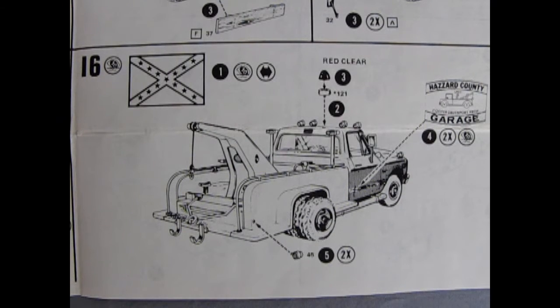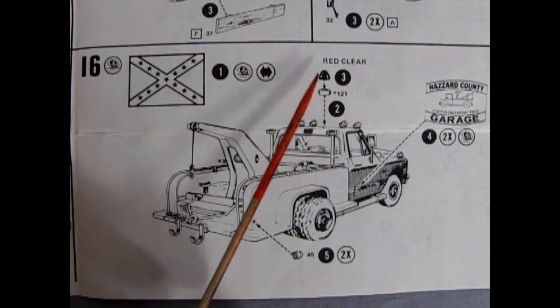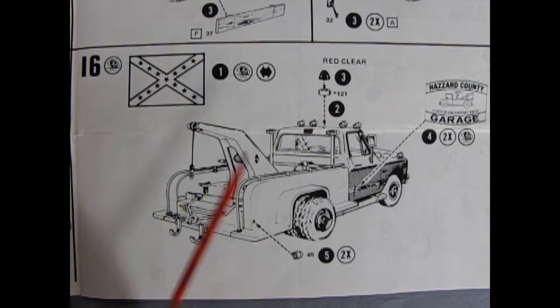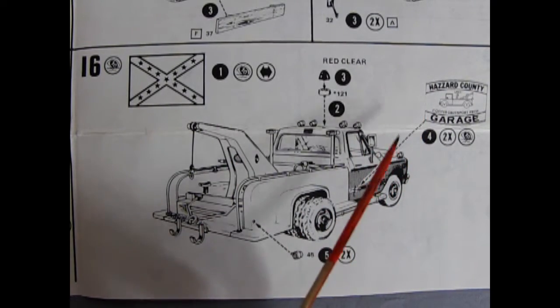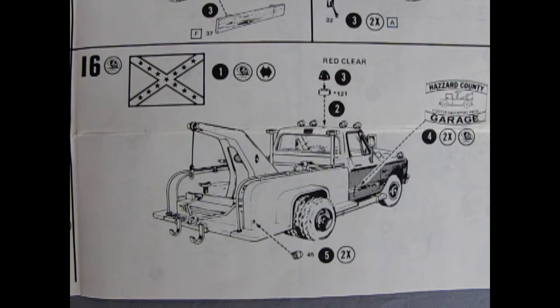No Duke's Boys truck would be complete without the flag, the signal lights, the rear tail lamps, and of course the Hazzard County garage decal that goes right on the door so you know that this is Cooter's pickup truck.